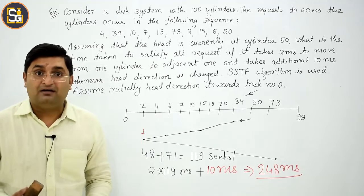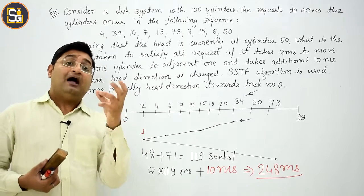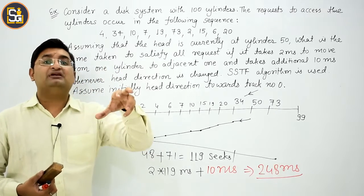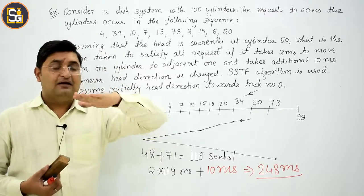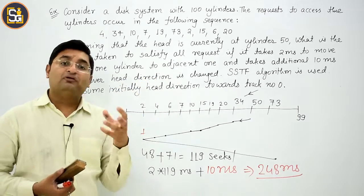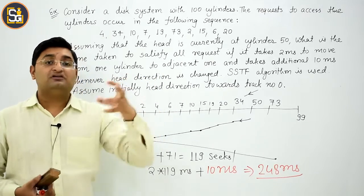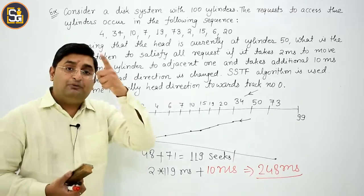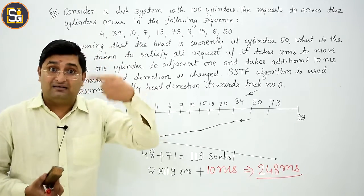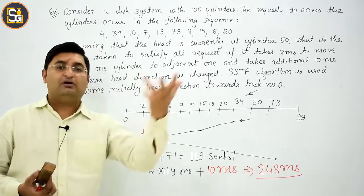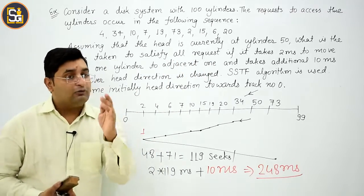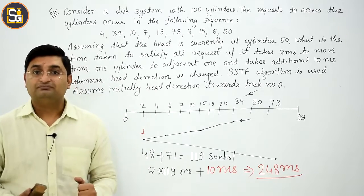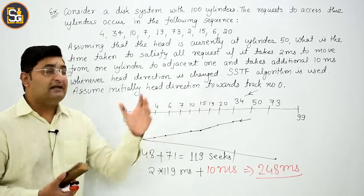This type of variation can be given to you. Next, what other variety of question can be created? Here I'm giving you track number or cylinder number. But it's possible that you're given cylinder number, sector number, and surface number. All three things are given, and some multiple requests are given, and seek time is asked. Then you will consider cylinder number or track number, whichever is given in that equation. And this type of question has already been asked in GATE. Is there any doubt?